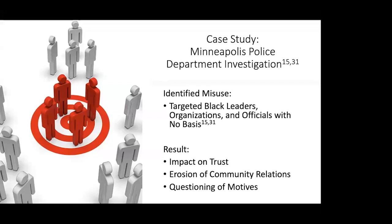So we're going to get into our case study — the Minneapolis Police Department investigation. This investigation arose as a result of the George Floyd incident in Minneapolis and the surrounding area. There were a variety of problems here. The Minnesota Department of Human Rights conducted a large investigation, as did the Department of Justice. The results that they came back with were very alarming. There was clear targeting of Black leaders, organizations, and officials with no basis — there was no criminal aspect to provide a reasoning for this investigation, and no justification was able to be provided. This negatively impacted trust in the community and rose to concerns of racial profiling and bias policing, which was an underlying theme throughout the entire investigation.